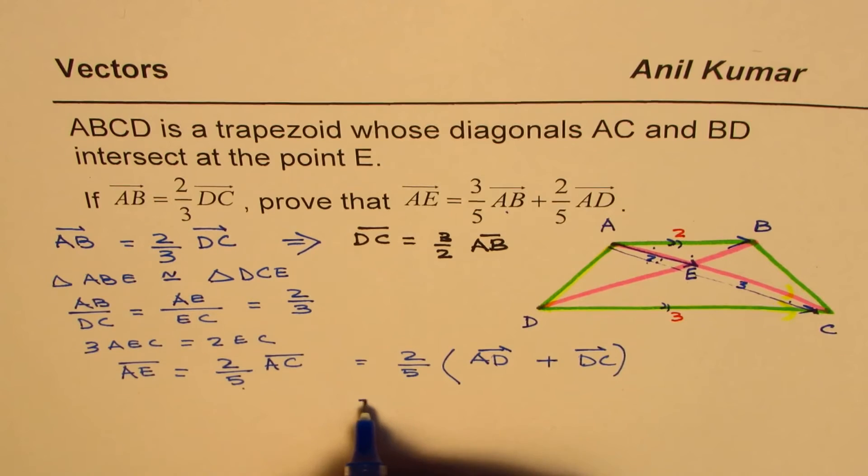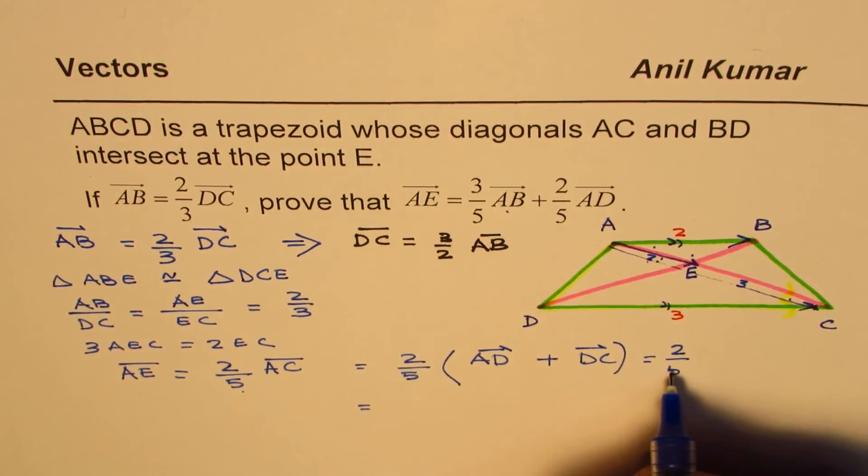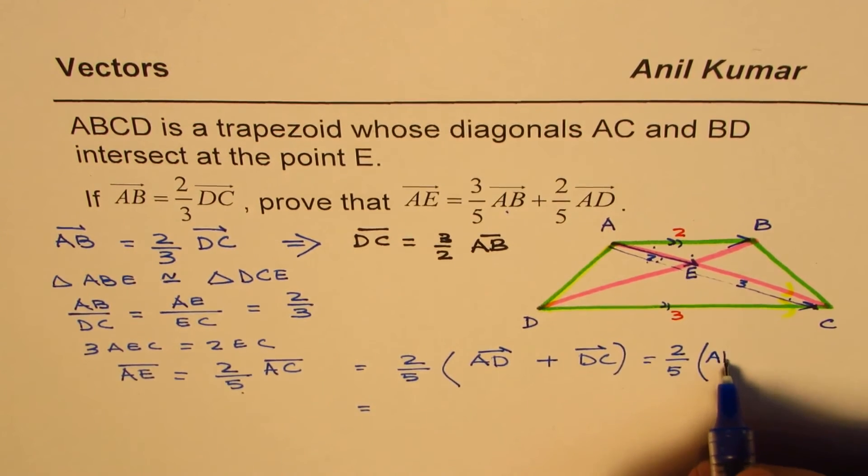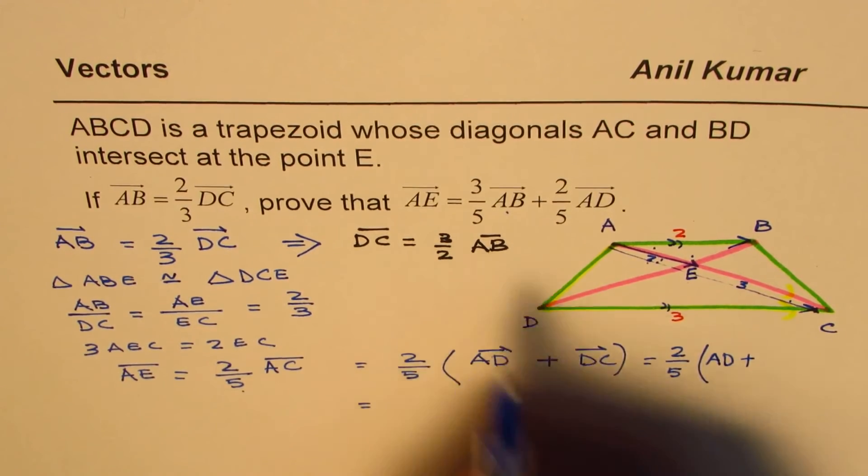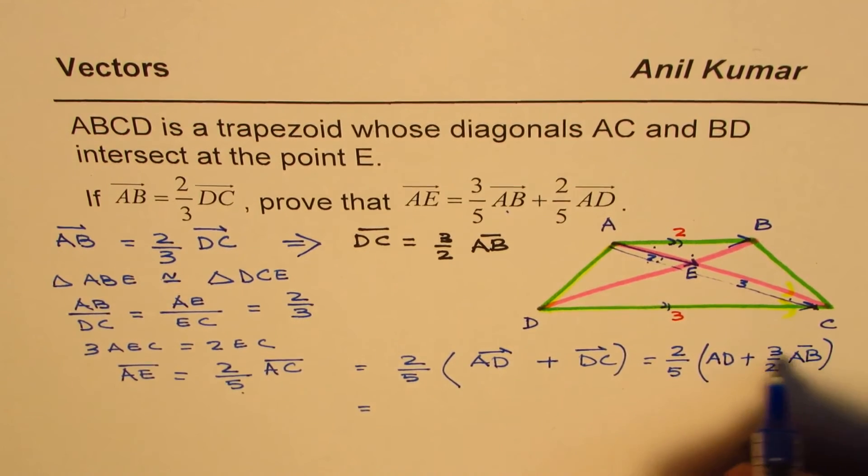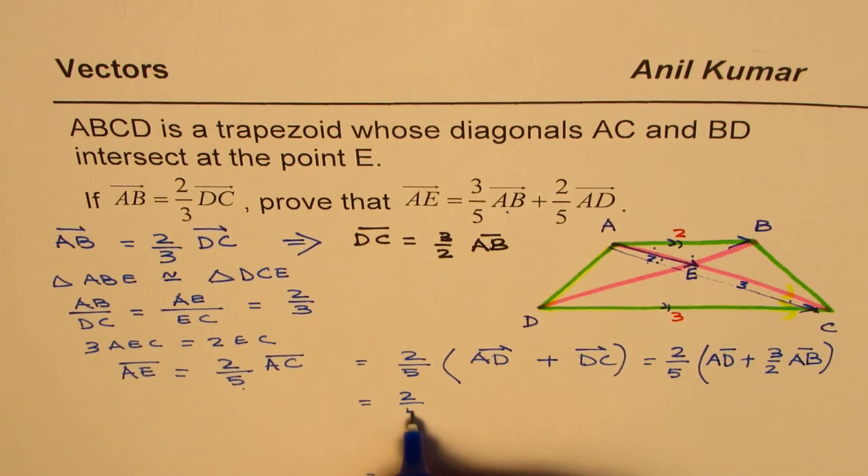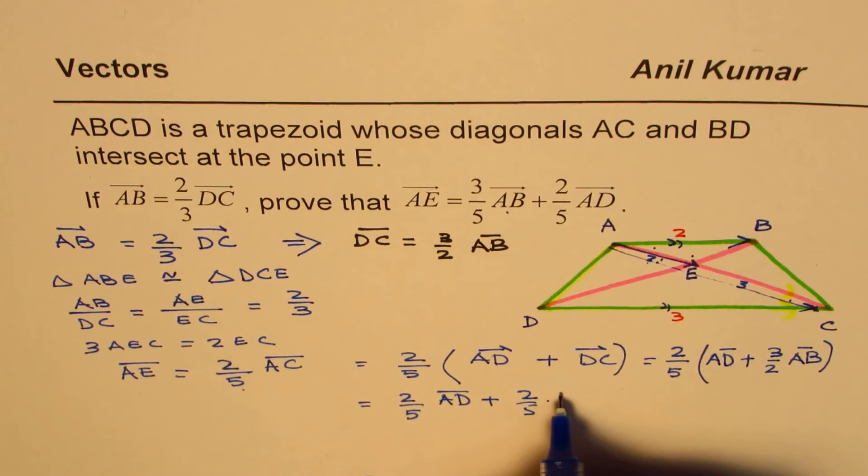So here we'll change DC to 3 over 2 of AB. So what we get here is, let me continue here and then we'll come back. 2 over 5 of AD plus DC is 3 over 2 of AB. So we'll write this as 3 over 2 of AB. Now open the bracket, so we can write this as 2 over 5 of AD plus 2 over 5 times 3 over 2 of AB.